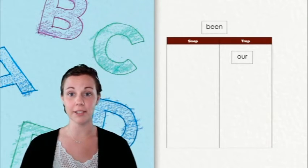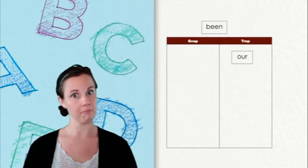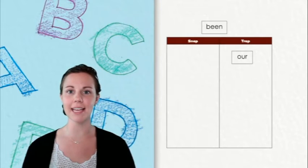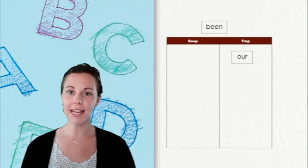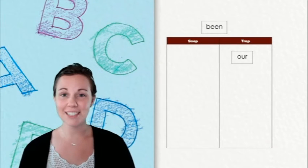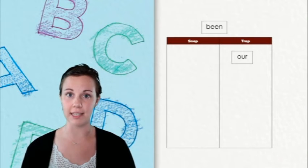Here's our next word. It says been. When I say been, it sounds like a short I sound, but when I look closely at the word, I notice it's using the EE pattern which should make a long E sound.